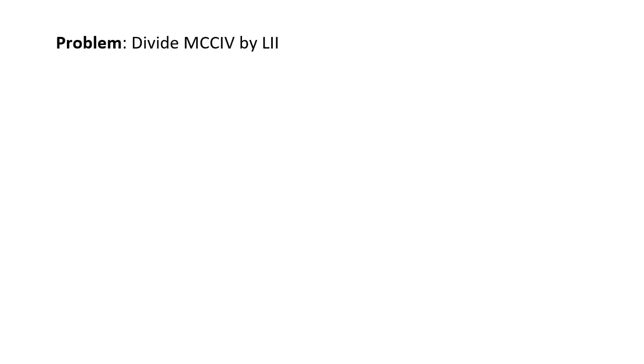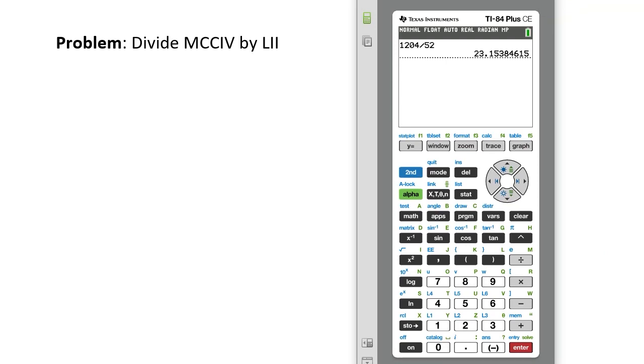I'm going to give you a problem, but you can't change it to decimal numbers. Divide MCCIV by LII. You can't change to decimal numbers. How you write something down really matters to how you can think about it. Of course, that's 1204 divided by 52. So much easier nowadays.